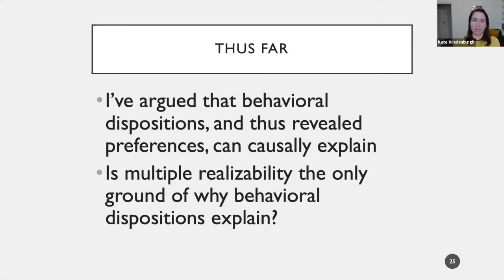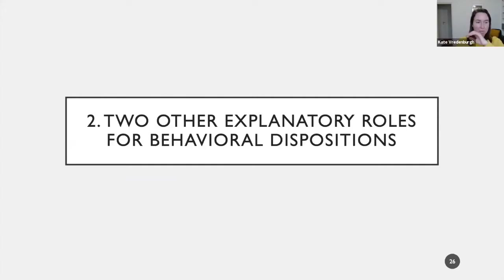So far I've argued that behavioral dispositions and thus revealed preferences can causally explain — at least if you accept the antecedent of this conditional. You might wonder: is multiple realizability the only grounds for why behavioral dispositions explain? If so, we might have a unified account of dispositional explanation across the social sciences. In the next part of the talk I want to argue against this unified account by looking at two other explanatory roles for behavioral dispositions.